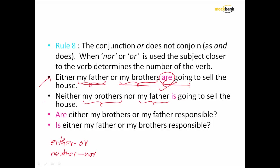Now the second example: 'Neither my brothers nor my father...' Out of 'my brothers' and 'my father,' which is closer to the verb? My father is closer, and hence 'my father' is going to decide what the helping verb should be. So it is going to be 'is,' because 'my father' is closer to the verb than 'my brothers.'